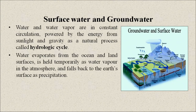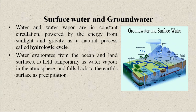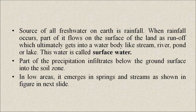Now, let us come to surface water and groundwater. Water and water vapor are in constant circulation powered by the energy from sunlight and gravity as a natural process called the hydrologic cycle. Water evaporates from the ocean and land surface, is held temporarily as water vapor in the atmosphere, and falls back to the earth's surface as precipitation. The source of all fresh water on earth is rainfall. When rainfall occurs, part of it flows on the surface of the land as runoff, which ultimately gets into a water body like a stream, river, pond, or lake. This water is called surface water.